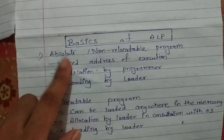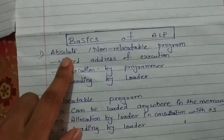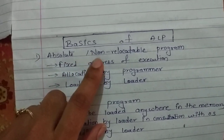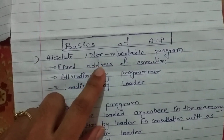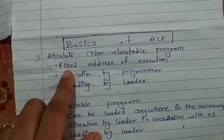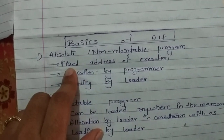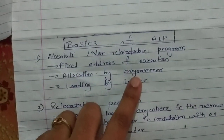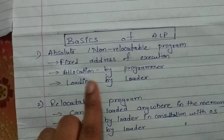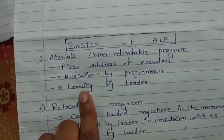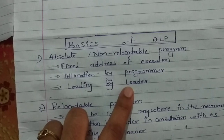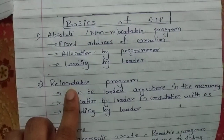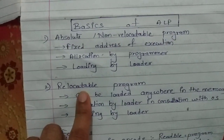In an absolute or non-relocatable program, the address at which the program is supposed to execute is fixed. In this case, the allocation is done by the programmer and the loading is done by the loader.